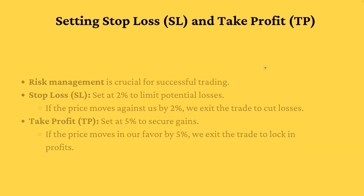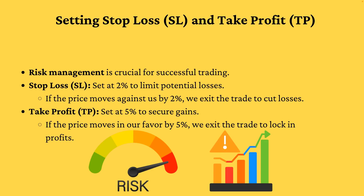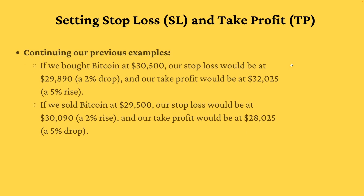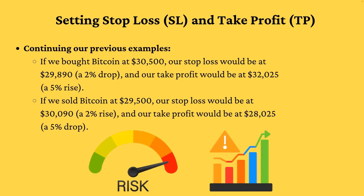Risk management is crucial. For every trade, we set a stop loss at 2% and a take profit at 5%. This means if the price moves against us by 2%, we cut our losses. Conversely, if the price moves in our favor by 5%, we secure our profits. Continuing our previous examples, if we bought Bitcoin at $30,500, our stop loss would be at $29,890 — a 2% drop — and our take profit would be at $32,025 — a 5% rise.